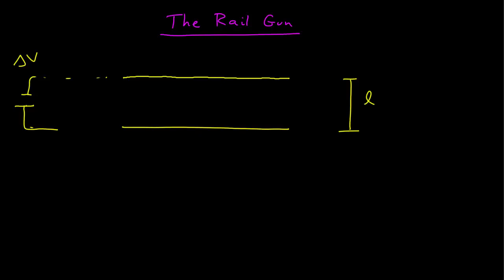To complete the circuit, we take a metal bar and we lay it across the wires. So this is some conducting bar, and that would then complete the circuit. That would send a current, say, in this direction, some I, then there would be a current I through the bar, and then back through the other rail.